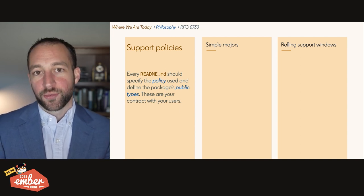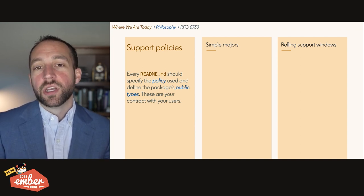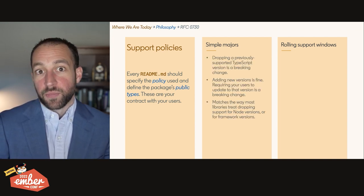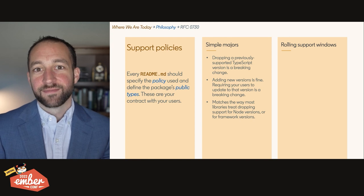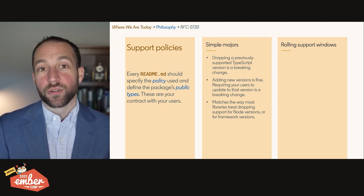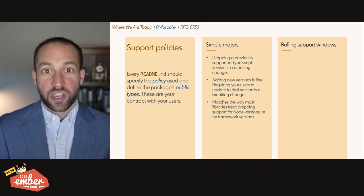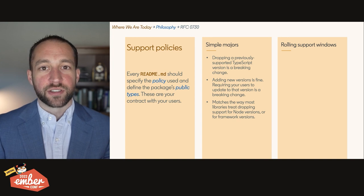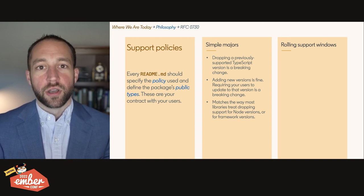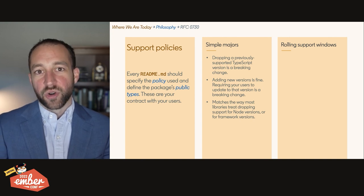There are two broad options: the simple majors policy and the rolling support window policy. Simple majors is simple: if you drop support for an existing TypeScript version, that's a breaking change for your library. You can add support, of course, but you can't make people upgrade their TypeScript version without it being a breaking change. This matches ecosystem norms around things like Node — when a Node LTS goes out of support and we drop support for it, most libraries call that a breaking change.